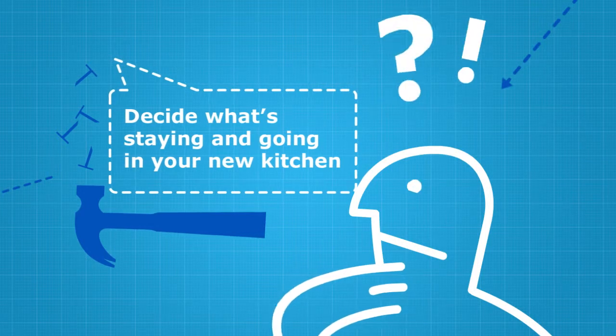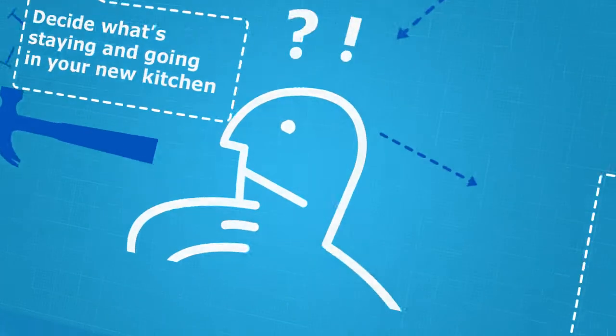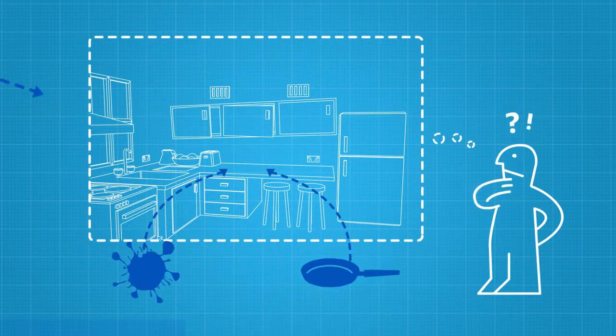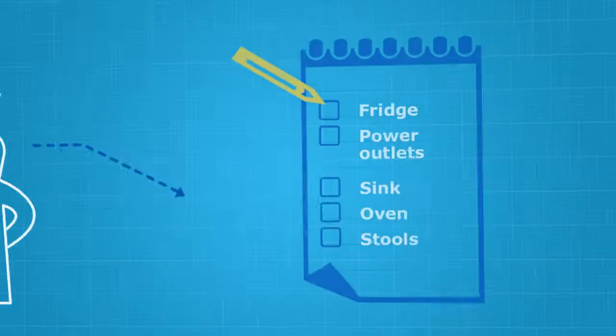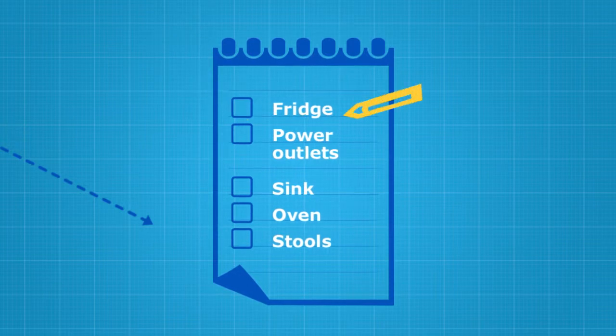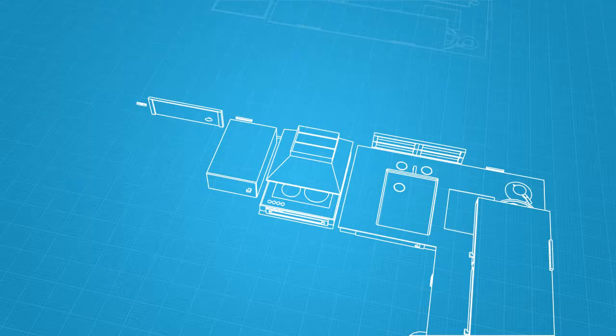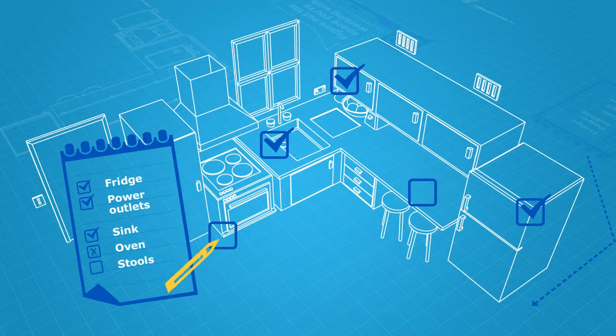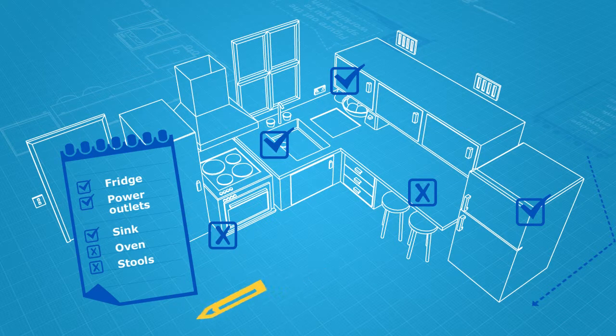Firstly, decide what's staying and going in your new kitchen. So you want to pull out your saggy cabinets and stained bench tops, but what about the more practical items? Make a list of the things you want to keep and the things you'd happily live without. And decide whether some of those pieces include appliances or your current furniture, like those cracked vinyl stools from your mother-in-law.